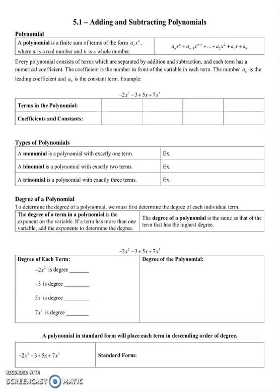The coefficient is the number in front of the variable in each term. The number a sub n is the leading coefficient, and a sub 0 is the constant term.